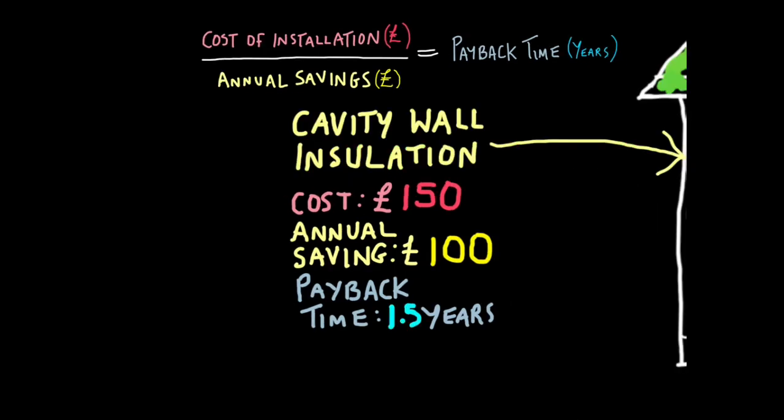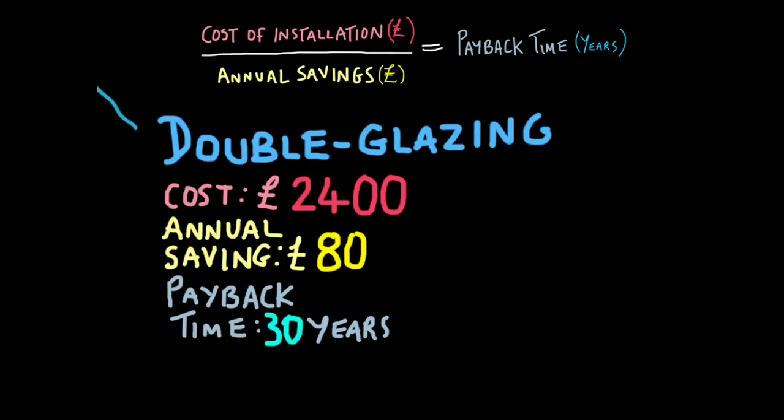Now if we look at cavity wall installation, the cost is £150. The annual savings are £100. So £150 divided by £100 will give you a payback time of 1.5 years, one and a half years. So in one and a half years, you would have made your money back, and then everything else is profit.